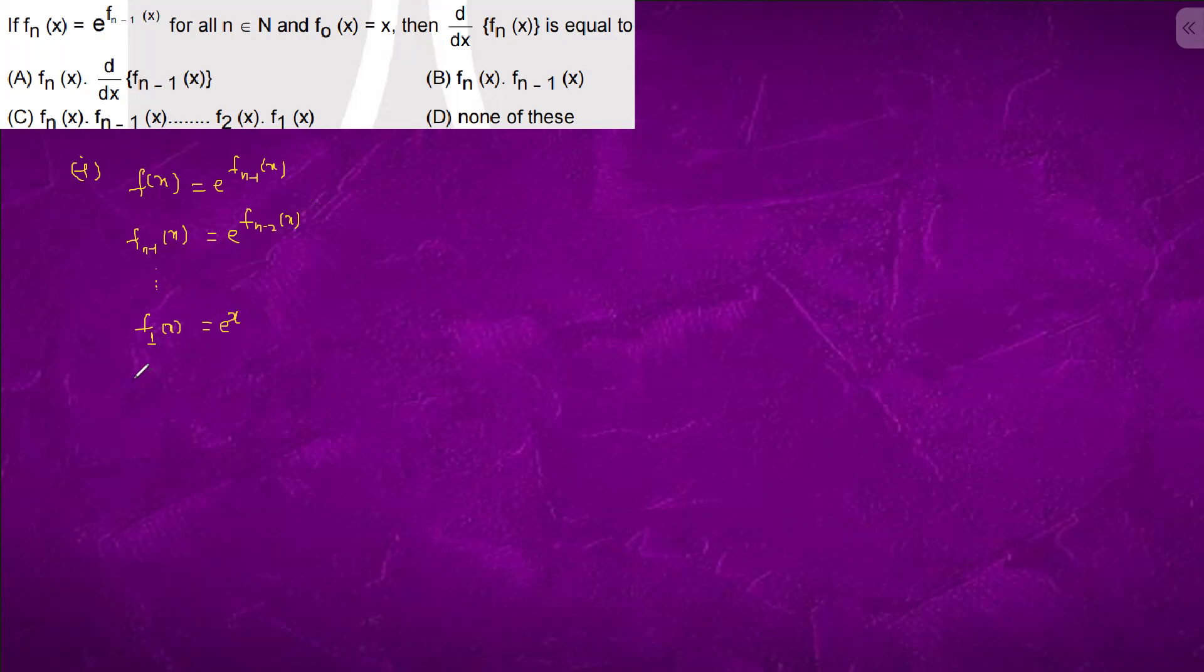So, if we see further, it is e to the power f2 is e, e, x. So if it is 2, it is 2 times e n x.